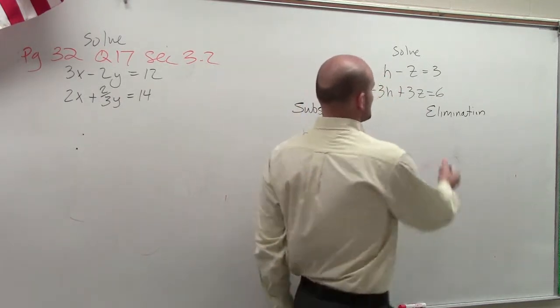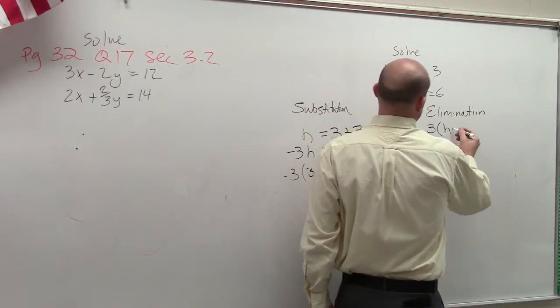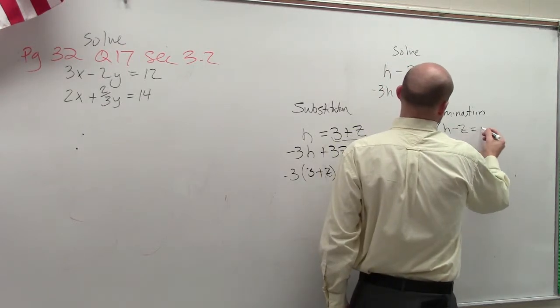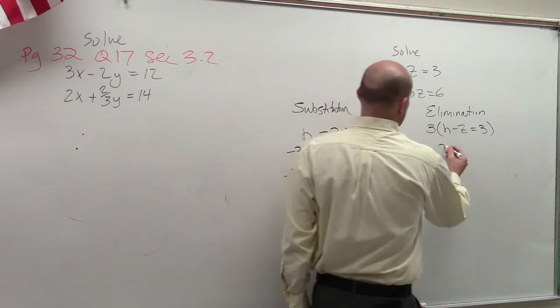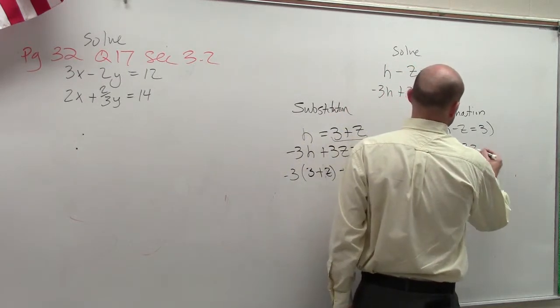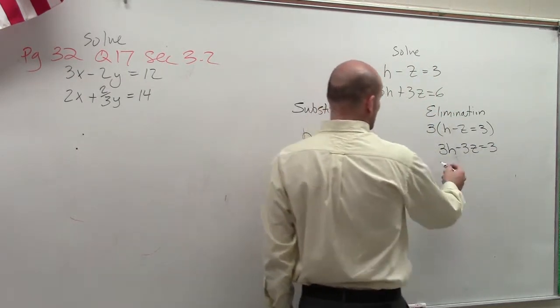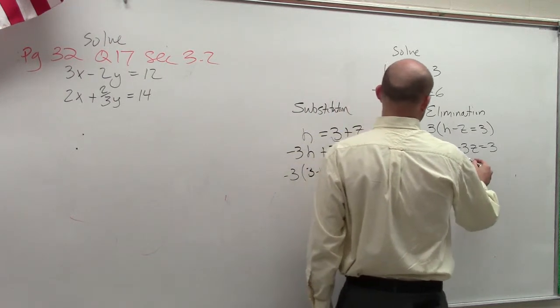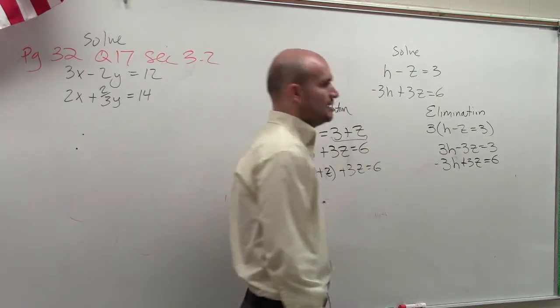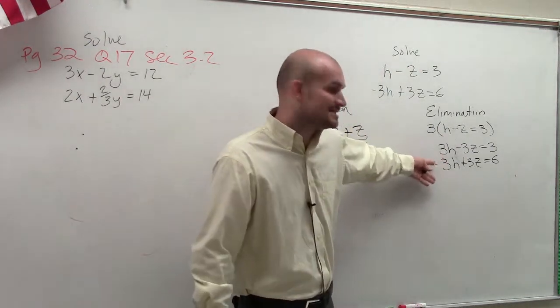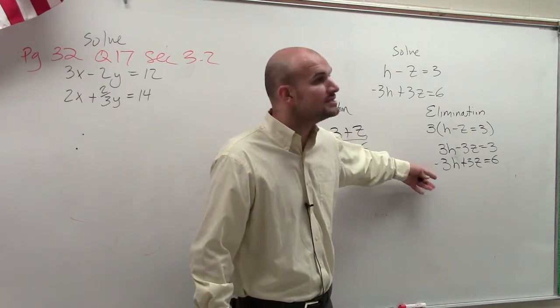So what I'm going to do is I'm going to multiply 3 times h minus z equals 3. So I multiply the whole equation by 3. So therefore, I get 3h minus 3z equals 3. And then I have negative 3h plus 3z equals 6. Now, as you notice, when I add these up, I'm going to get zero coefficients.